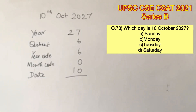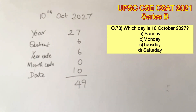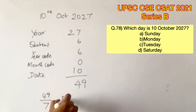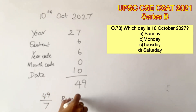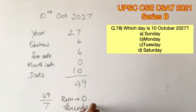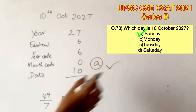Adding all these values up, we get 49. Now we find the remainder when 49 is divided by seven — the remainder is zero. Zero in the code refers to Sunday. So October 10th, 2027 would be a Sunday. Therefore, option A is the right answer.